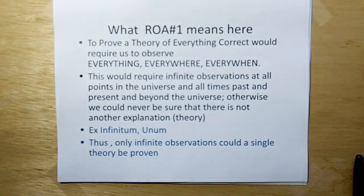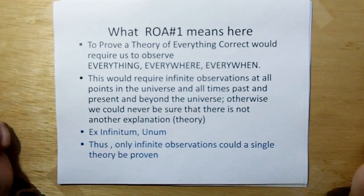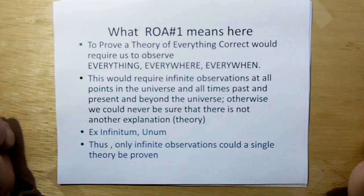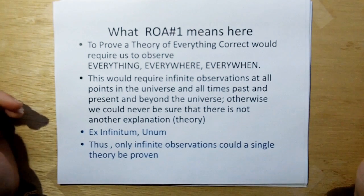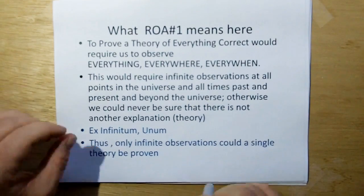So, what rule of acquisition means here is to prove a theory correct, it would mean that we have to observe everything, everywhere, every when. This would require infinite observations at all points in the universe, at all times past and present, and all points beyond the universe, otherwise we could never be sure that there's not another explanation or theory.